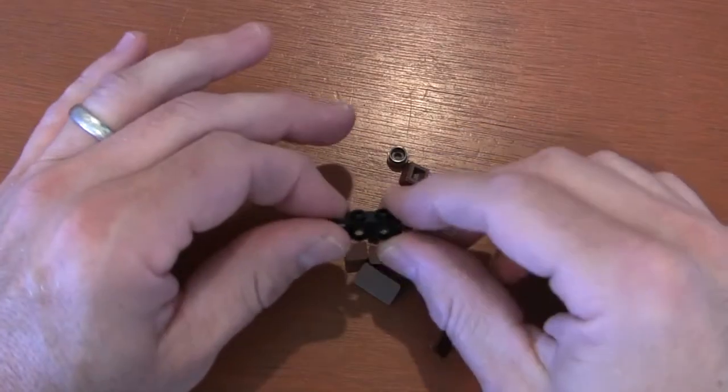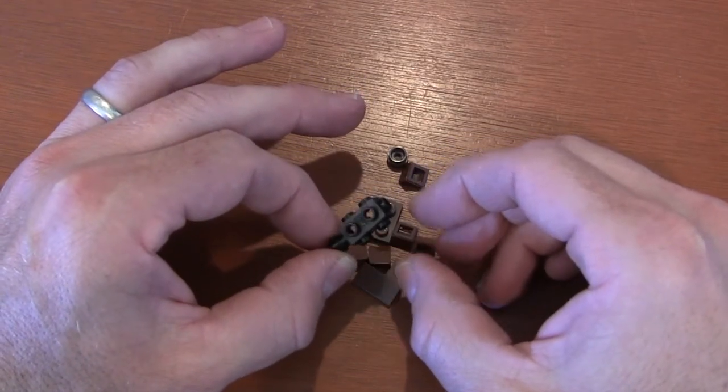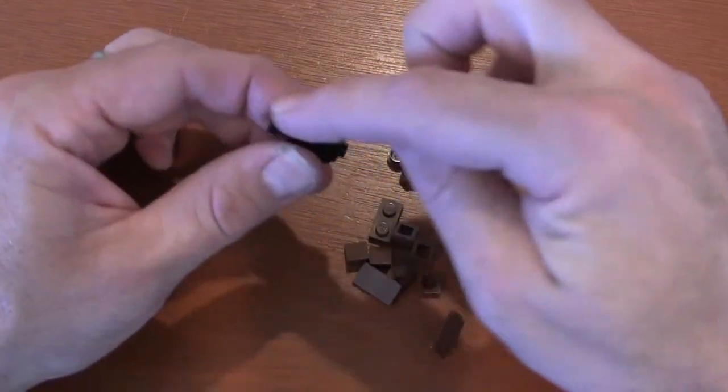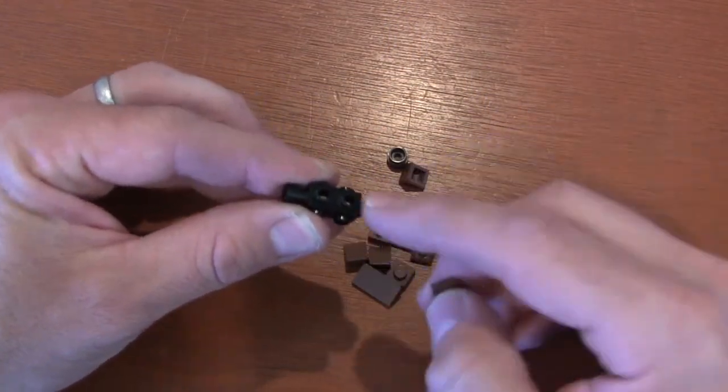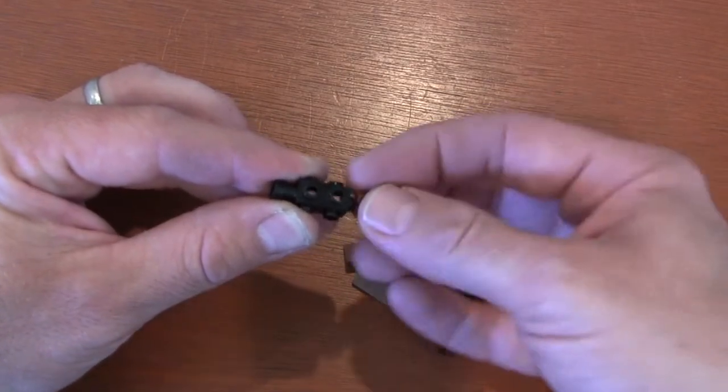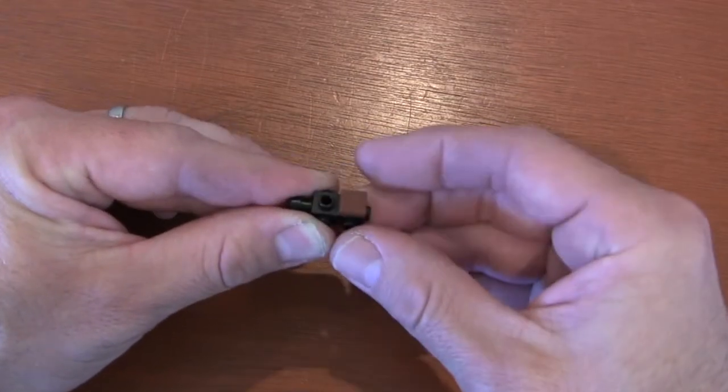The core of our ship is this one by two by two-thirds brick with studs on two sides. What we're going to do to the top of it is get a one by one tile piece and put it on that back stud here, close to that small stud in front. Put it right there so it's nice and even, and then behind that tile piece.